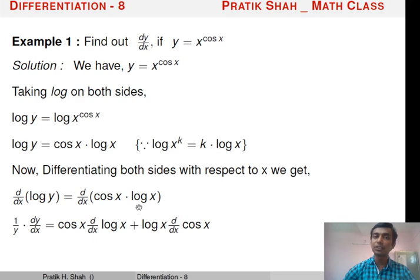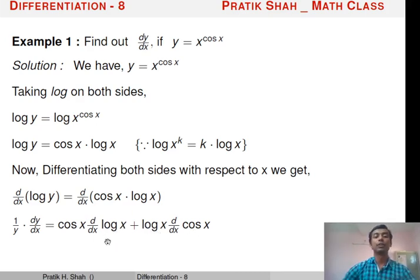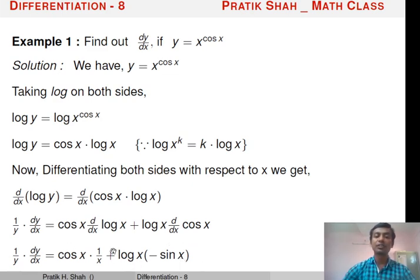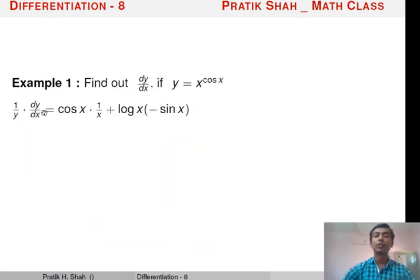On the right side, we apply the product rule: first function as it is times derivative of second function, plus second function as it is times derivative of first function. So: cos x as it is, d/dx of log x = 1/x; plus log x as it is, d/dx of cos x = −sin x. So we get: (1/y)·(dy/dx) = cos x·(1/x) + log x·(−sin x).